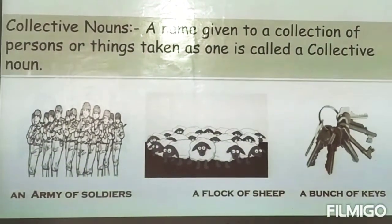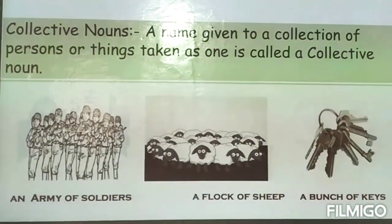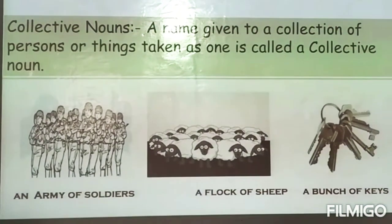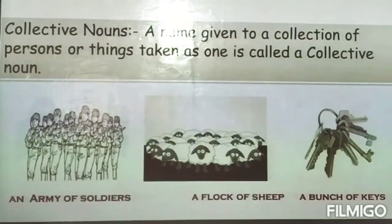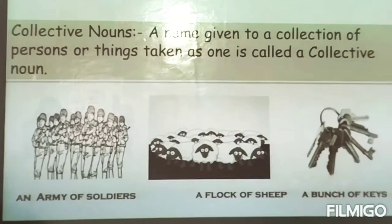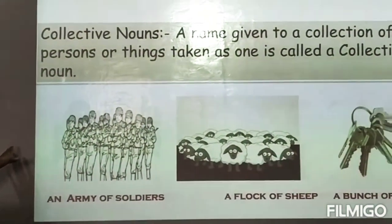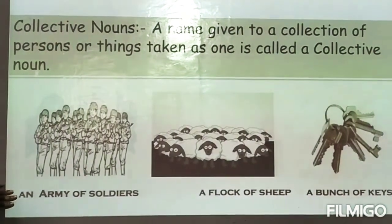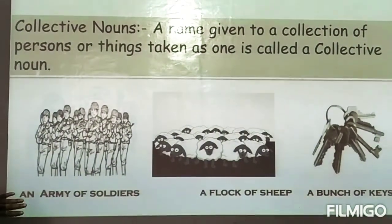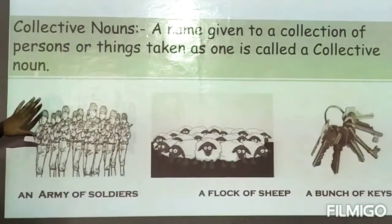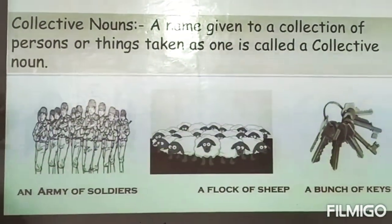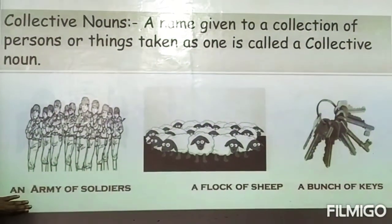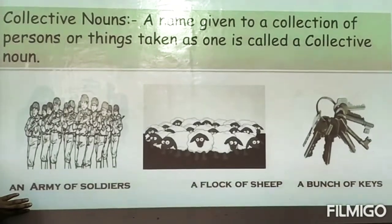Now, collective noun. A name given to a collection of persons or things taken as one is called a collective noun. For example, 'an army of soldiers' — there are many soldiers, and their collection is called an army. So 'army' is a collective noun.